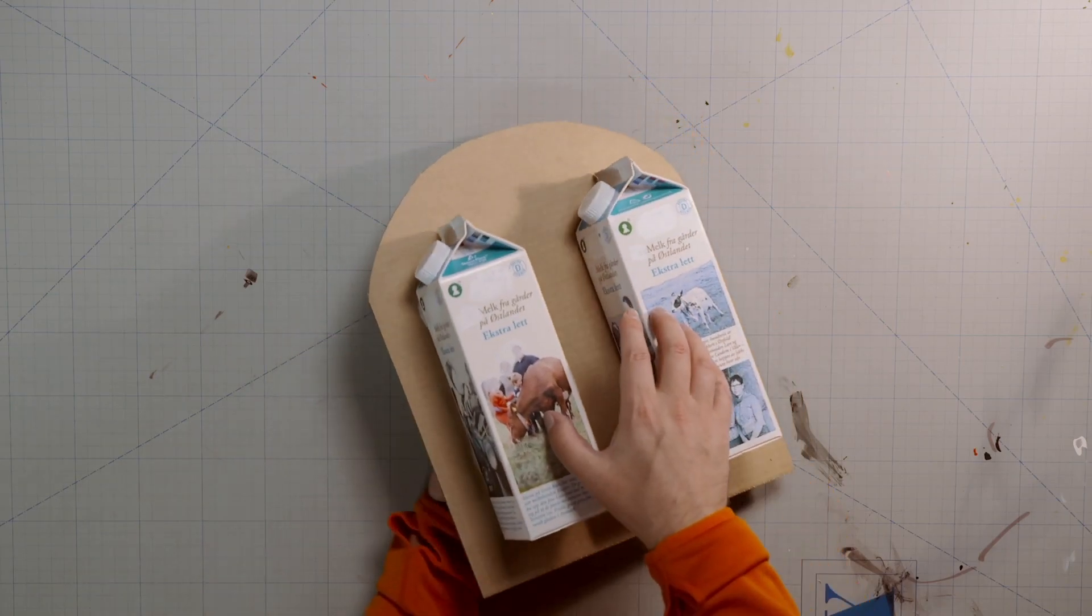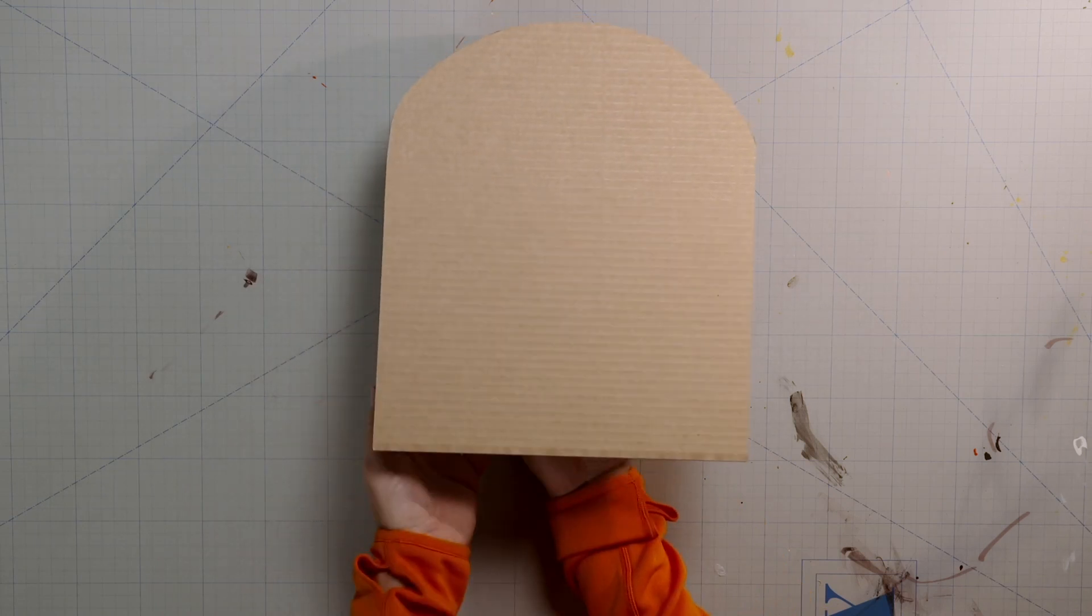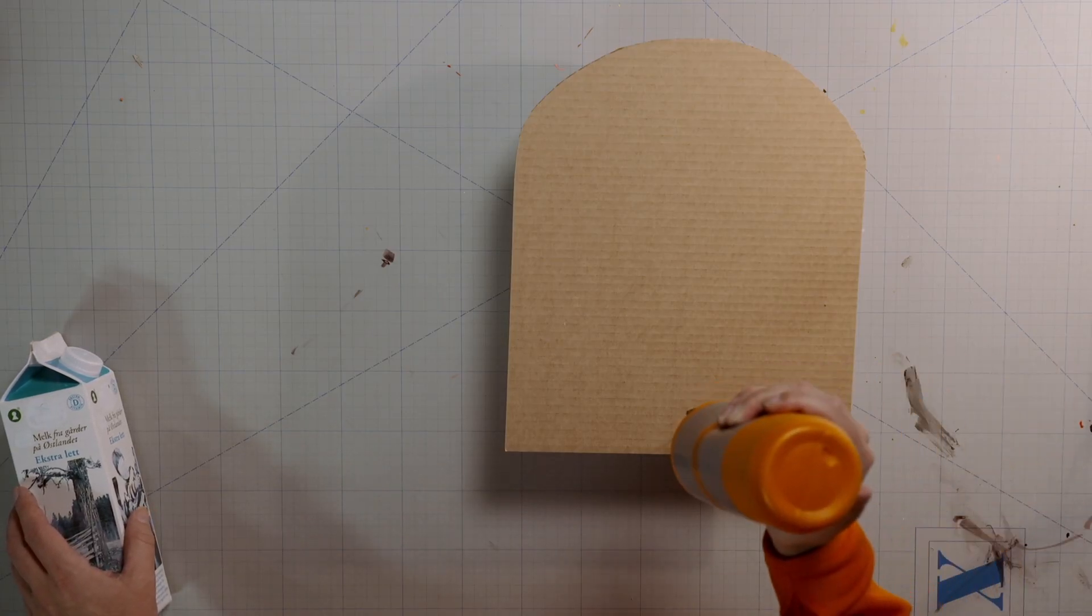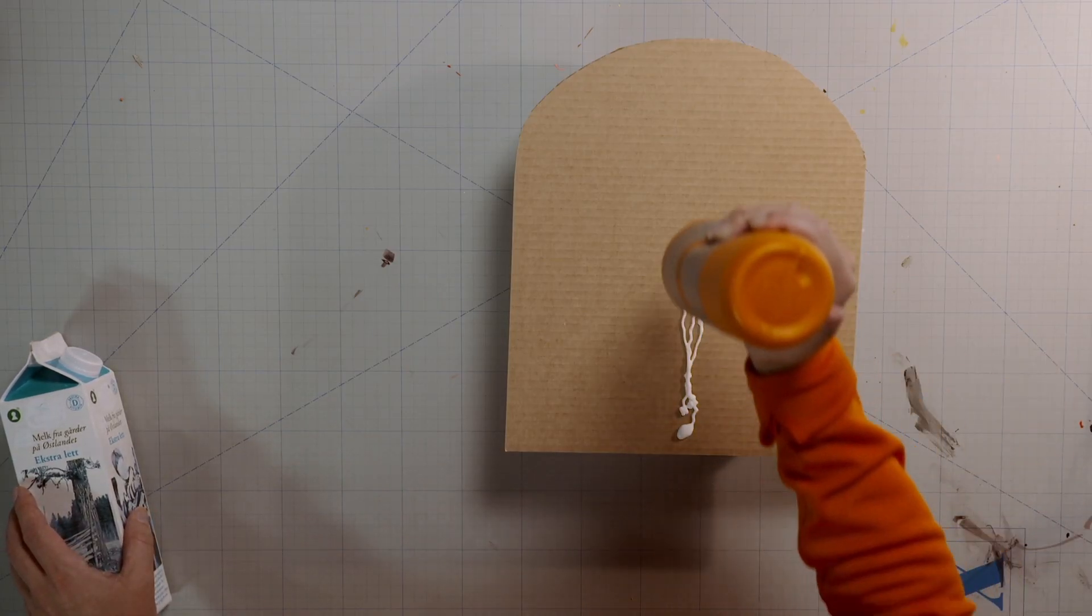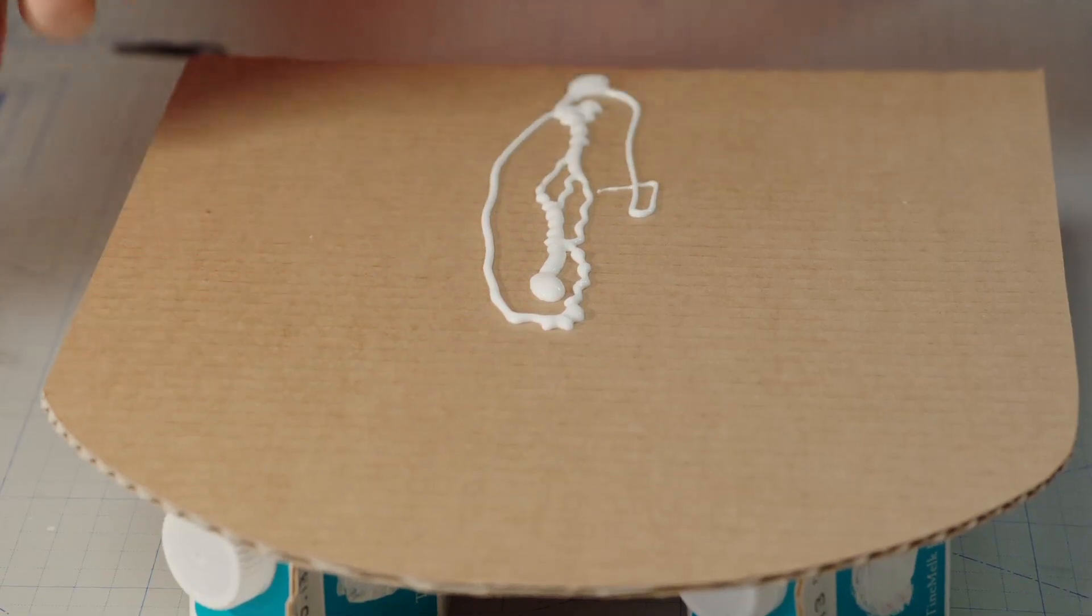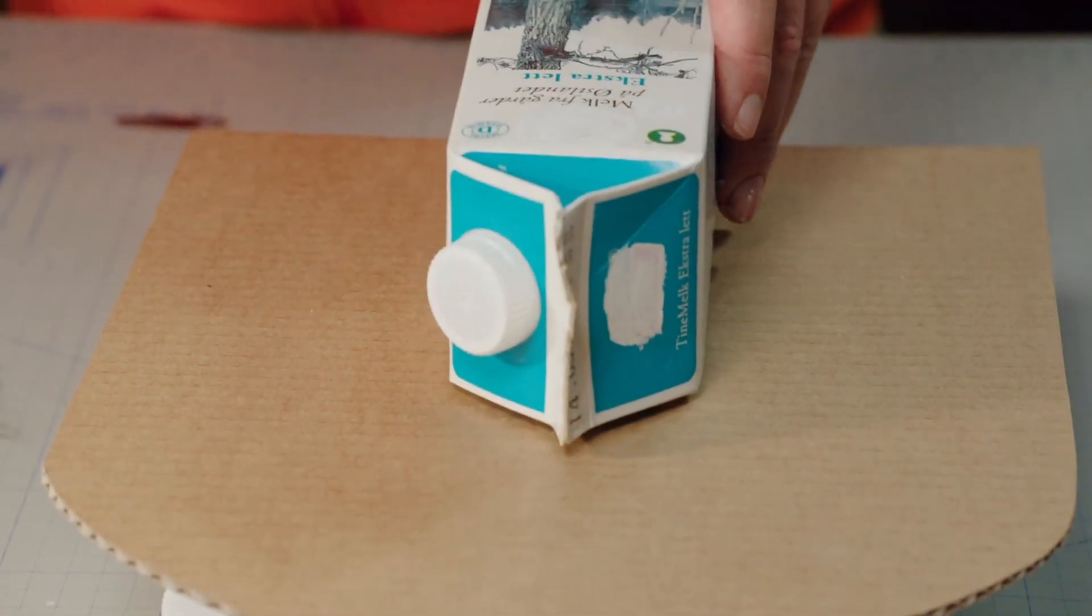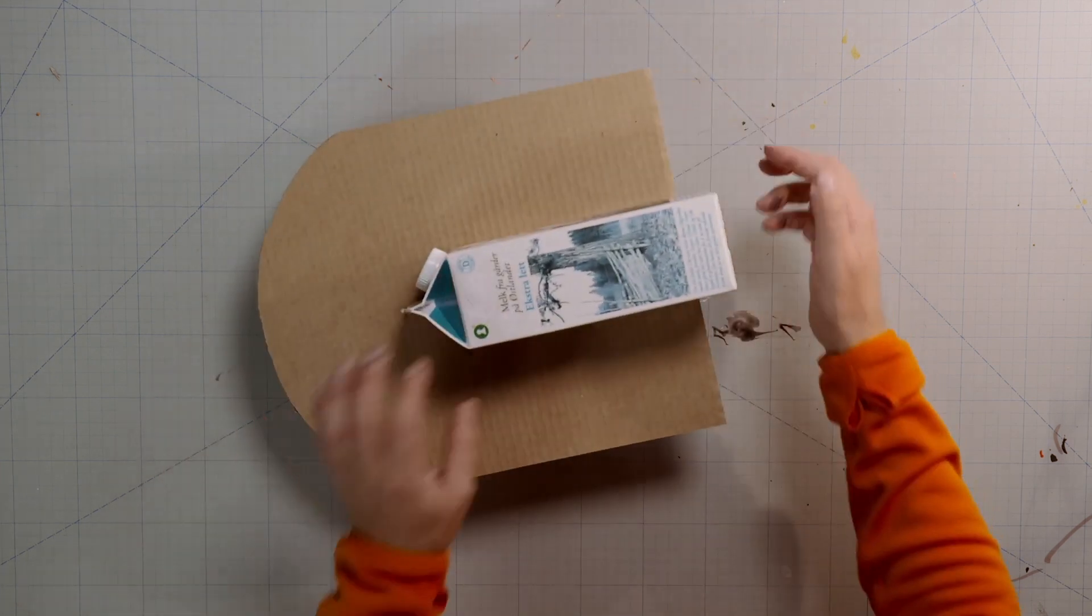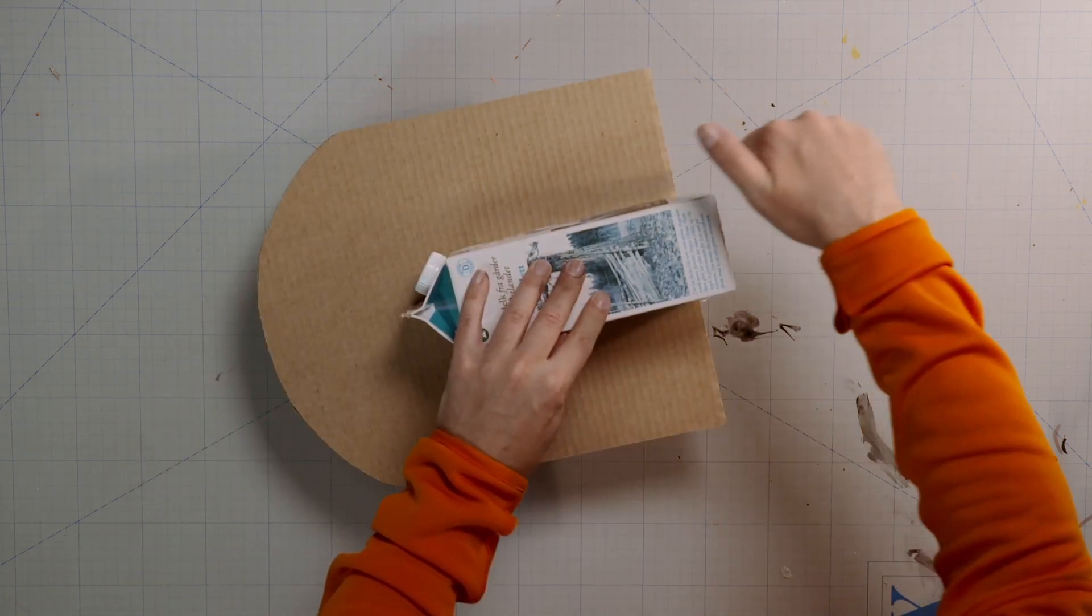Turn it back over and glue on the third carton. Right in the middle. With its back end poking out from the rest of the boat.